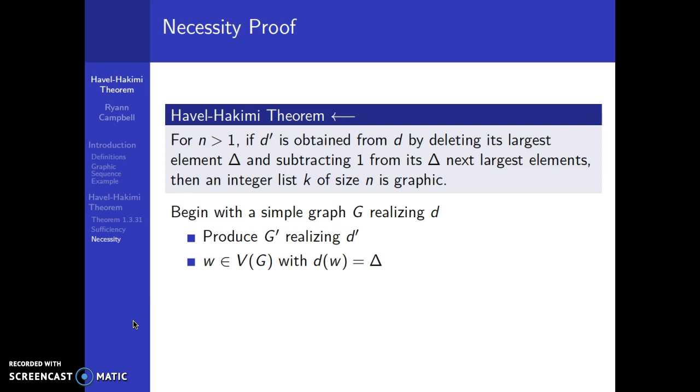We are going to find w, which is a vertex in G that has degree of Δ. So it would have that very first largest degree in the sequence. We also here want to find a set of vertices, which we're going to call S. The size of S is going to have to equal Δ.